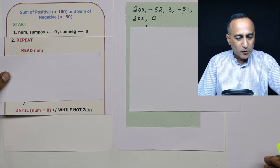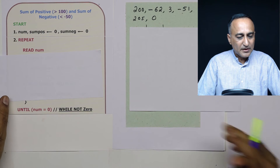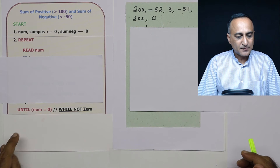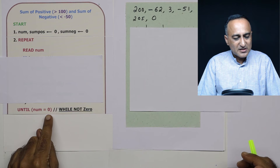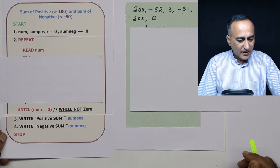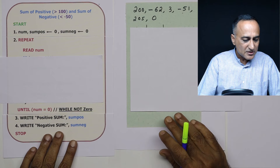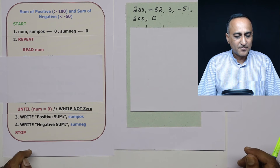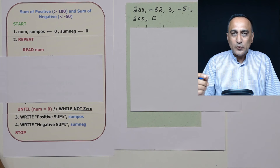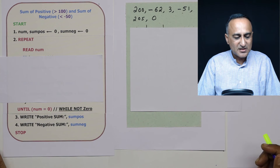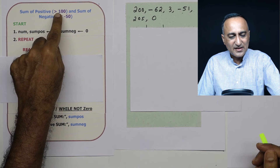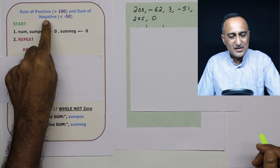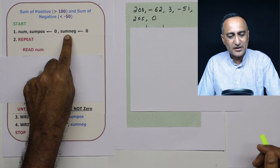I am going to use a repeat-until loop. Inside the loop, I will read a number, and only when the number is zero will I reach the last step and print the sum of positive numbers and the sum of negative numbers. Between the repeat and until, I take two decisions: if the number is greater than 100, I add it to sum positive; else if the number is less than minus 50, I add it to sum negative.